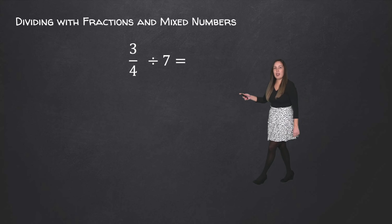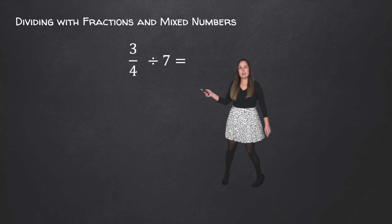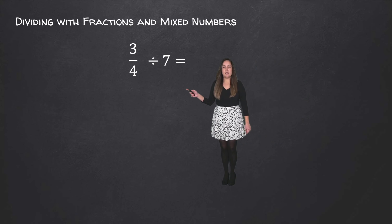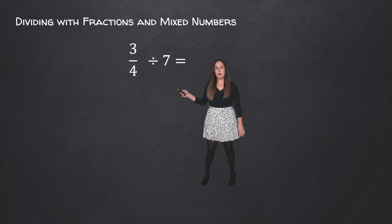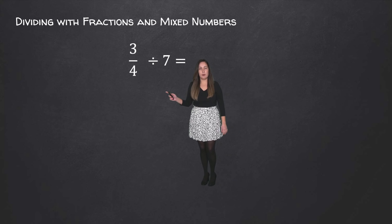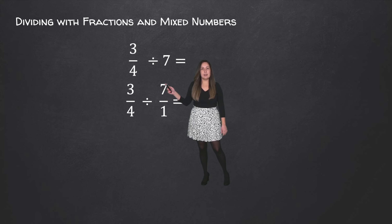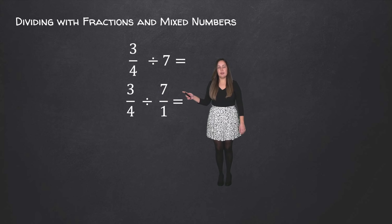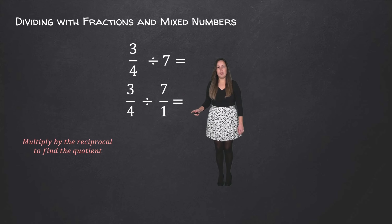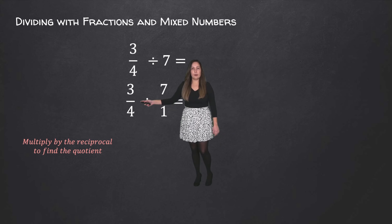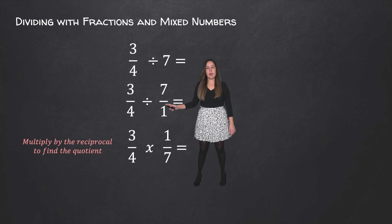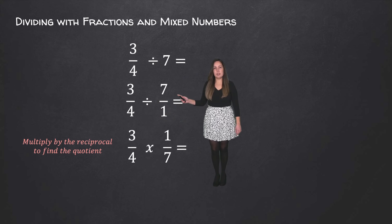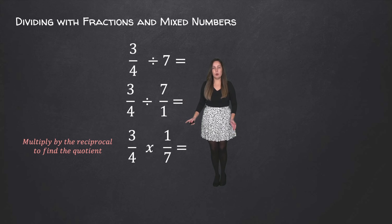To get us started, we have 3 fourths divided by 7. The first thing we need to do is make sure that both of these numbers are in fraction form. So 3 fourths is fine as is, but 7 needs to be rewritten as 7 over 1. Then we're going to take the 3 fourths and multiply it by the reciprocal of 7 over 1, which is 1 over 7, to get our quotient.